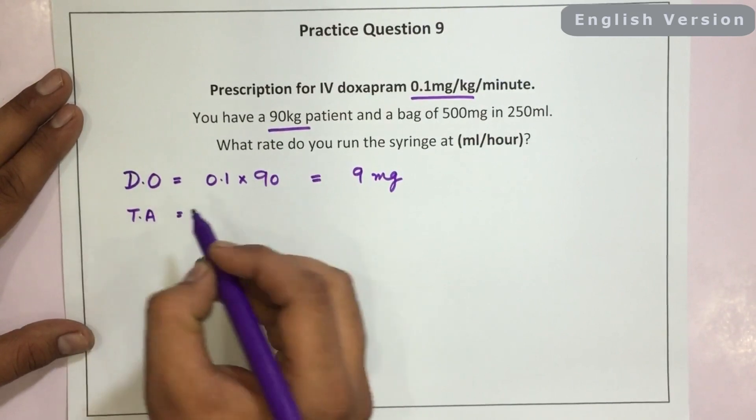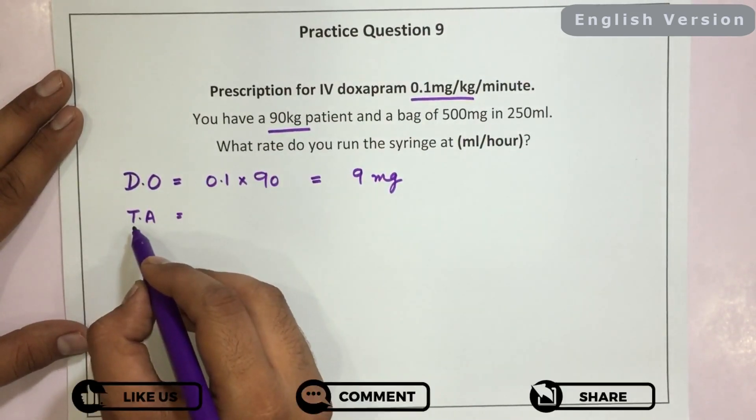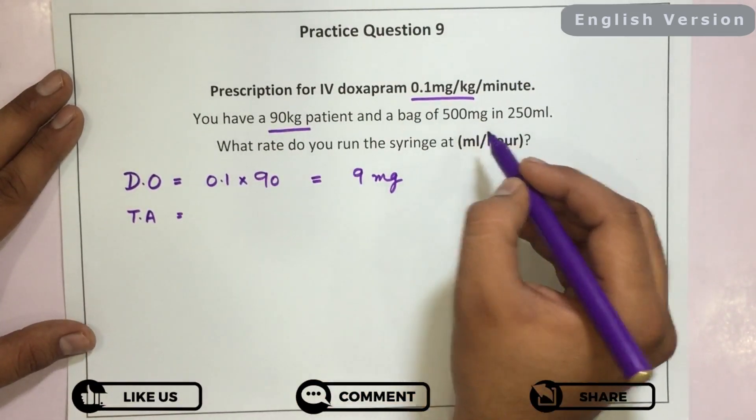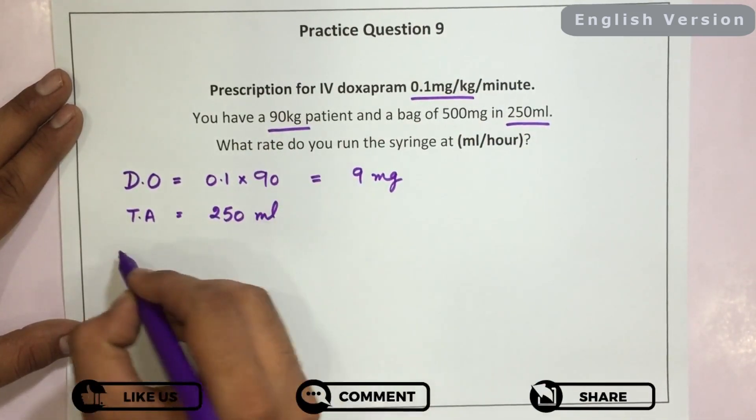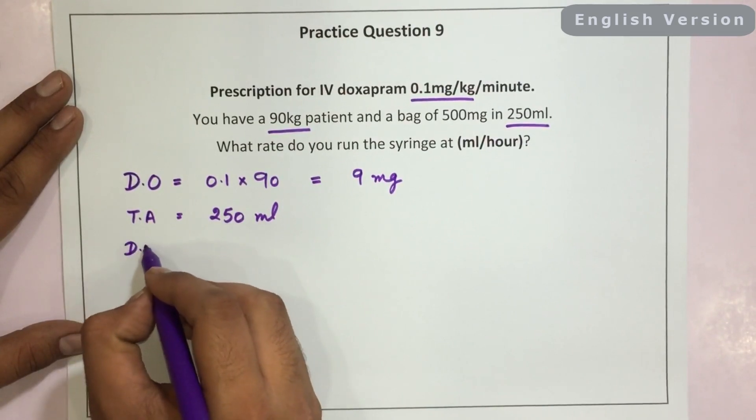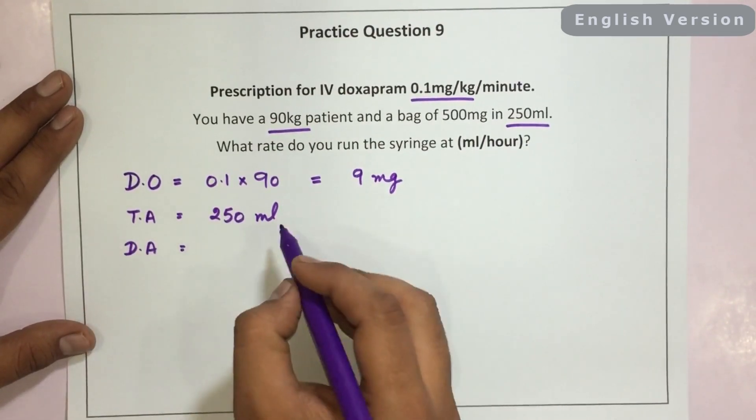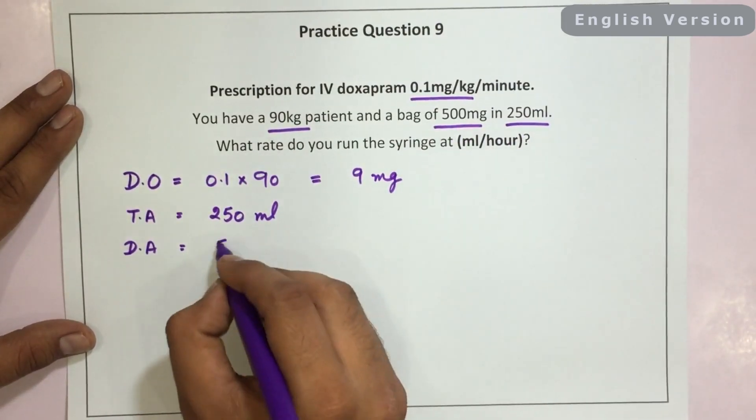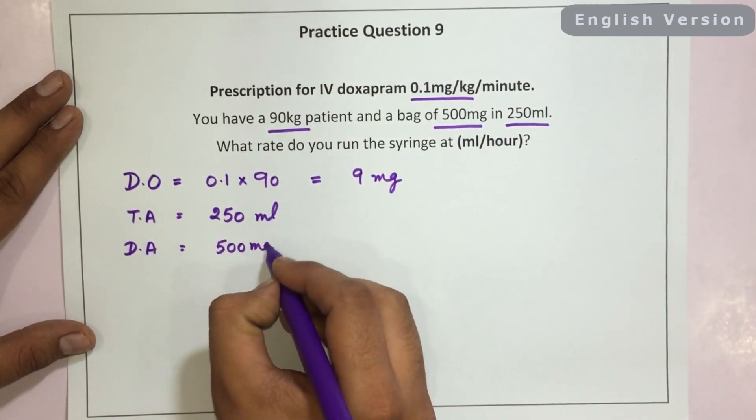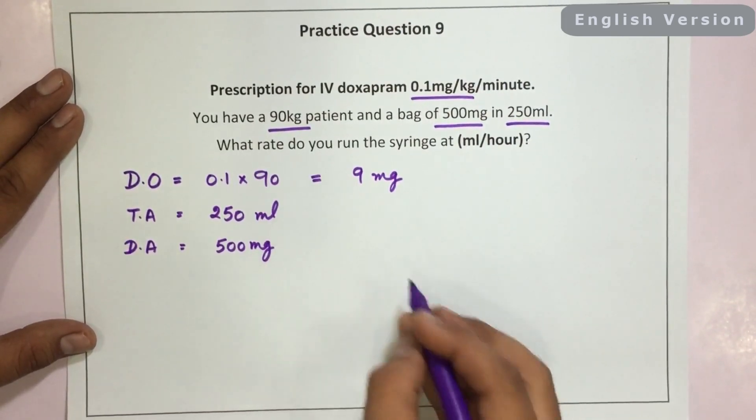Now step number two to see what is the total amount in ampoule. The total amount in ampoule is 250 ml. The third step would be to see what is the dose in the ampoule. The dose in the ampoule is 500 mg. Now I hope you can solve this question.